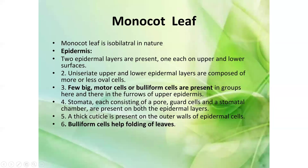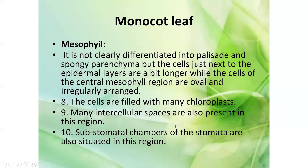Stomata consisting of guard cells and a stomatal chamber are present on both epidermal layers — upper and lower — in monocots. This is a key difference from dicot leaves. A thick cuticle is present on the outer walls of the epidermal cells, and the bulliform cells mainly help in folding of the leaves.